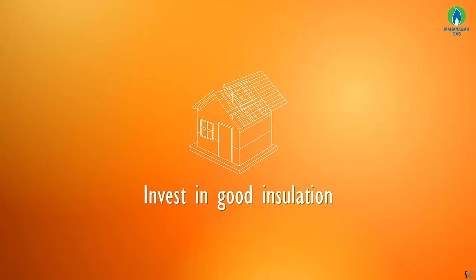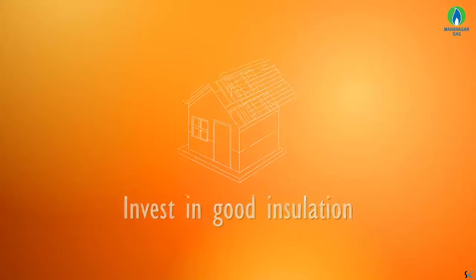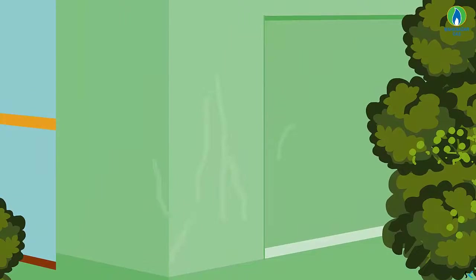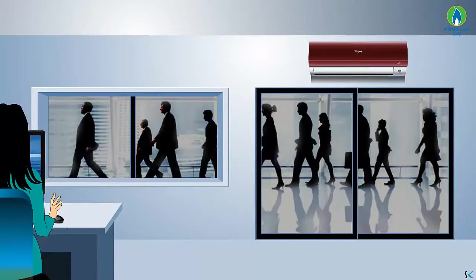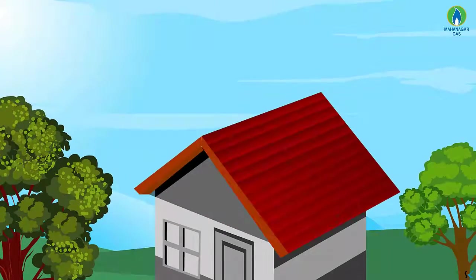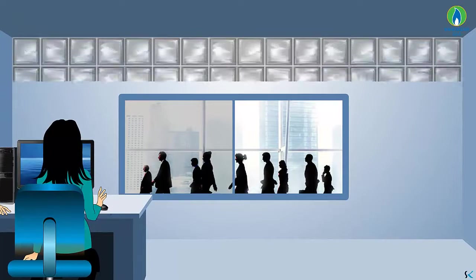Invest in good insulation. Seal exterior cracks, openings, gaps, etc. Consider thermal doors, thermal windows, roofing insulation, etc. If visibility is not required but light is required.